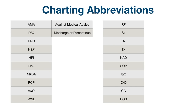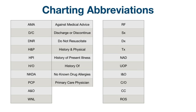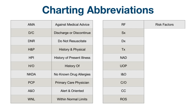DNR: do not resuscitate. H&P: history and physical. HPI: history of present illness. HO: history of. NKDA: no known drug allergies. PCP: primary care physician. A&O: alert and oriented. WNL: within normal limits. RF: risk factors.